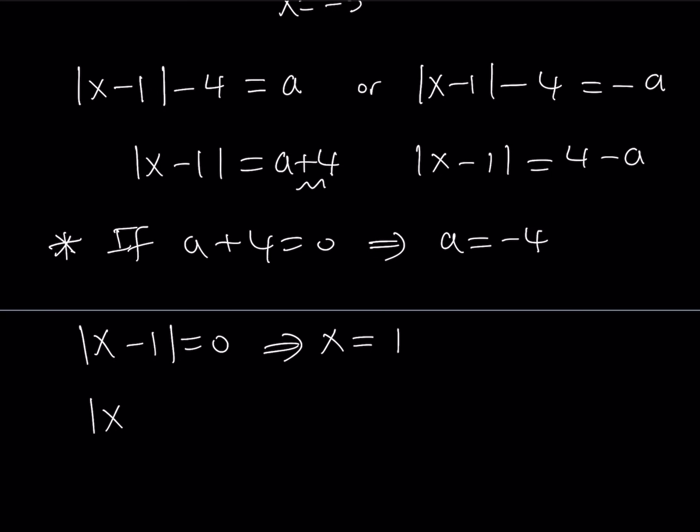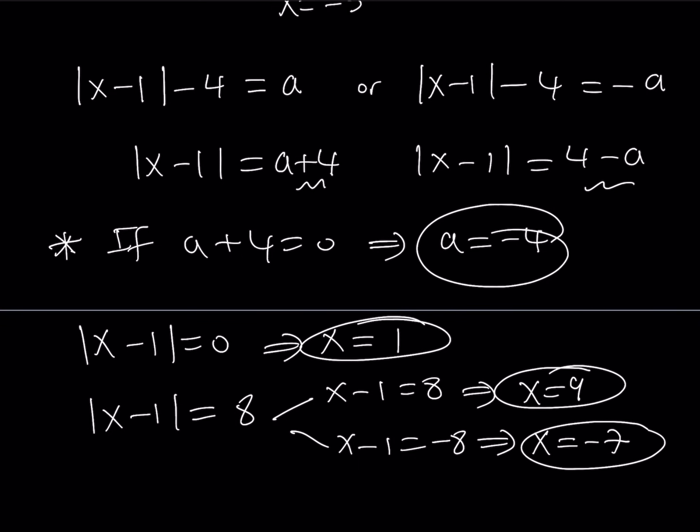The other one gives me the absolute value of x minus 1 equals 4 minus a. But if a is equal to negative 4, substitute and you're going to get 4 minus negative 4, which is 8. Now, this gives you two solutions. You can say that x minus 1 is either 8 or negative 8. From here you get x equals 9, and from here you get x equals negative 7. So looks like we got three solutions, right?